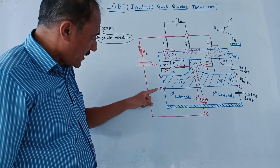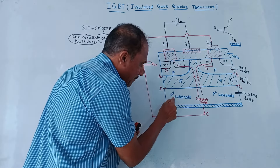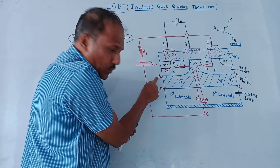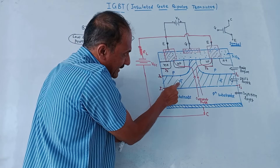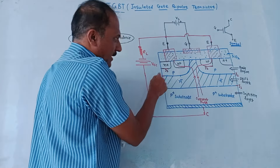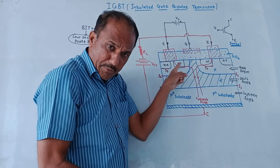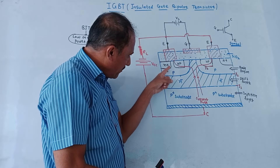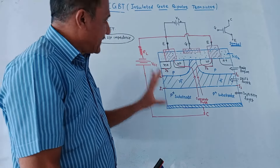Different junctions are shown in the diagram. Junction J1 is the junction between N- and P+ substrate — it appears on both sides. Junction J2 is the junction between P (body region) and N- (drift layer), again on both sides. Junction J3 is the junction between N+ and P (body region). So three junctions exist in this structure.